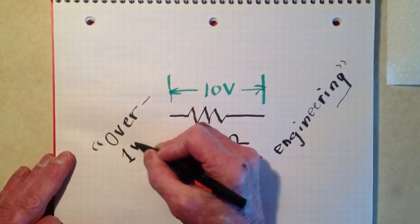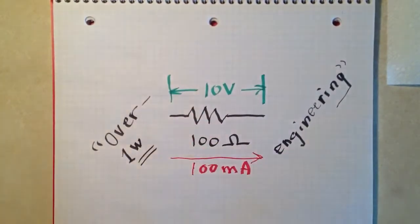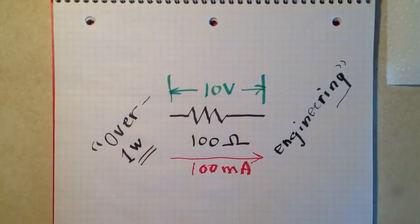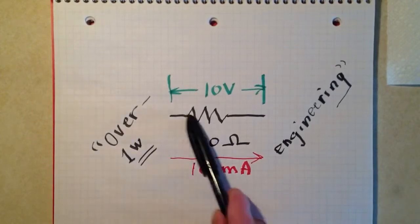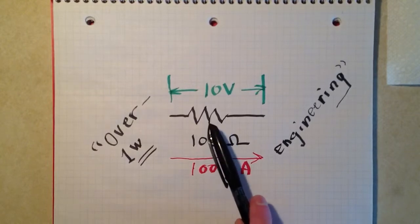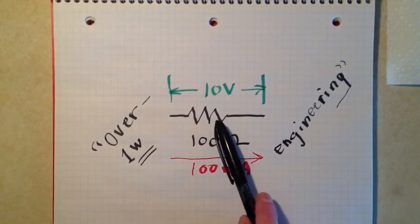Then I said we ought to incorporate some kind of an over-engineering buffer. We don't want to subject this resistor to its full rated 1 watt. Supposing that this is a resistor rated at 1 watt, and that's not too uncommon.